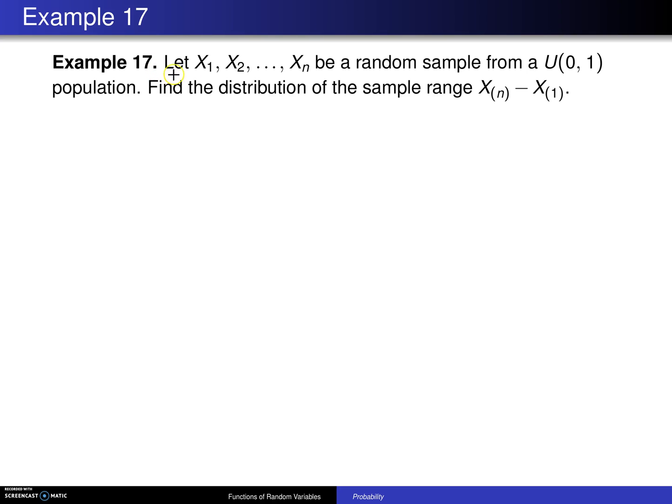So here's the problem. Let x1 up to xn be a random sample from a uniform 0, 1 population. Find the distribution of the sample range x_(n) minus x_(1).